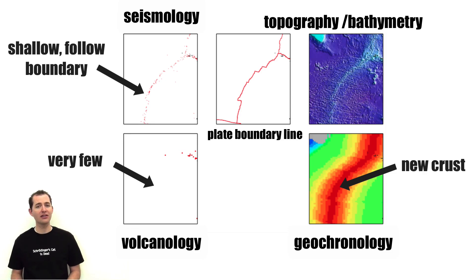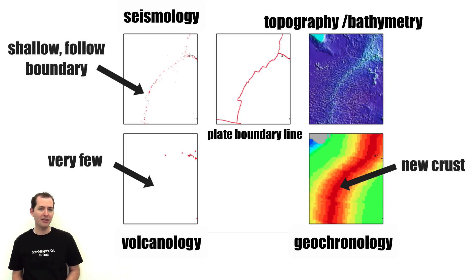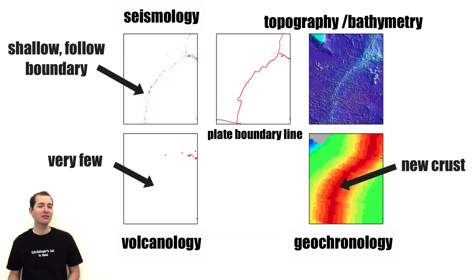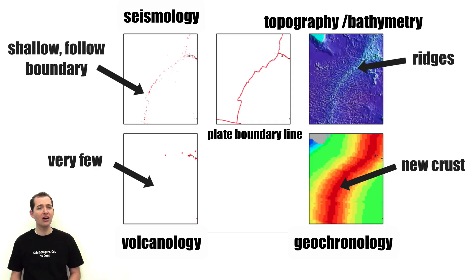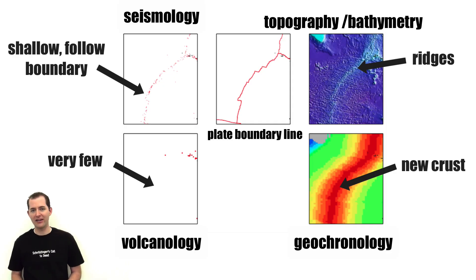The newest crust on the Earth always exists at divergent boundaries. Since divergent boundaries usually happen at the bottom of the ocean, they have no topography, which is the height of the land. But they do have specific features in their bathymetry, which is the depth of the ocean. Divergent boundaries have raised ridges along the plate boundary, which is the result of new crust being formed in these areas.